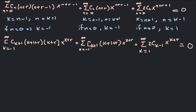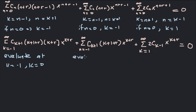Now we need all series to start at the same index. The first two start at k equals negative 1 and the last starts at k equals 1. The only option is to make everything start at k equals 1 by evaluating the first two series at k equals negative 1 and k equals 0 separately, then writing the remaining sum from k equals 1 to infinity. We do the same for the middle series.